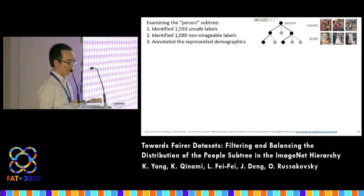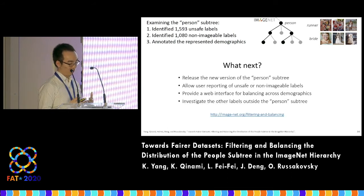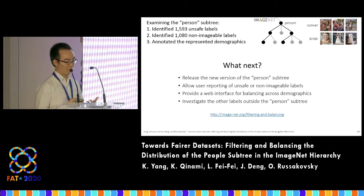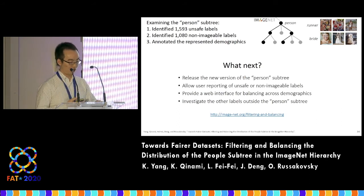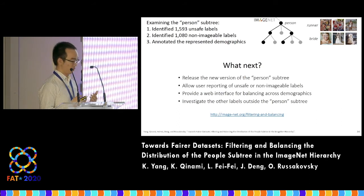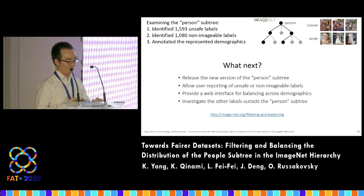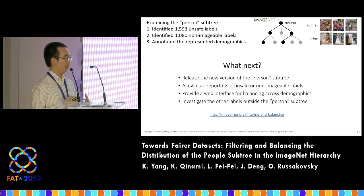So what's next? We will release the new version of the present subtree incorporating our proposed changes. We are in the process of updating ImageNet. Second, we will allow user reporting of additional unsafe and non-imageable labels. Different people have different views regarding offensiveness and imageability, and our results here only represent the views of our annotators. Therefore, we propose to open this question to the community.